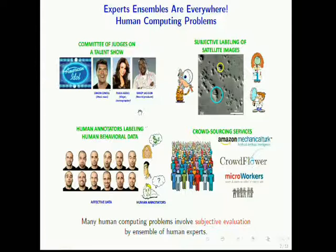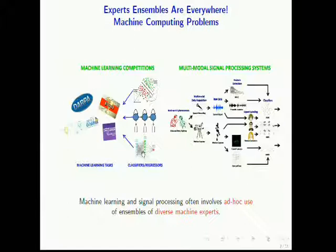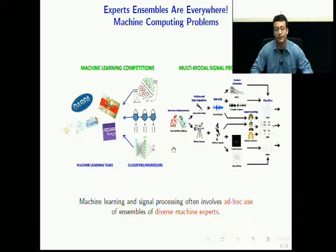For example, a committee of judges on a talent show, subjective labeling of satellite images, multiple human annotators which label human behavioral data, and even crowdsourcing services. All these examples involve subjective evaluation by an ensemble of human experts. The second example is machine computing problems ranging from machine learning competitions to multimodal signal processing problems, which often involve ad hoc use of an ensemble of diverse machine experts and systems.